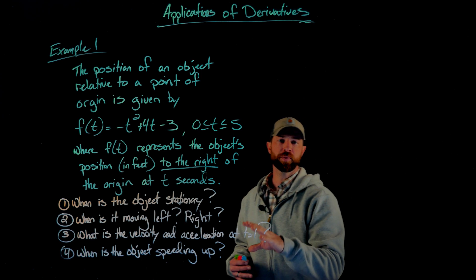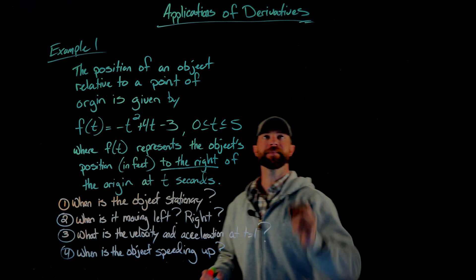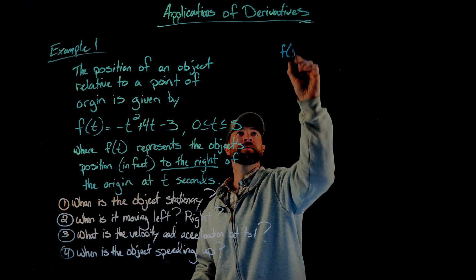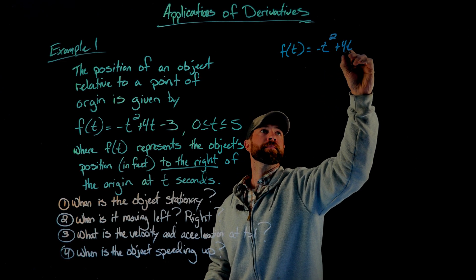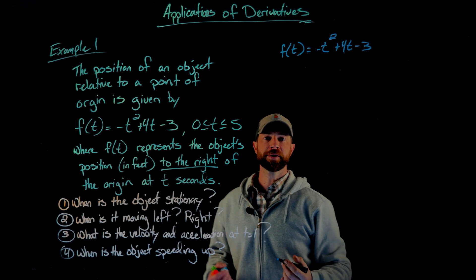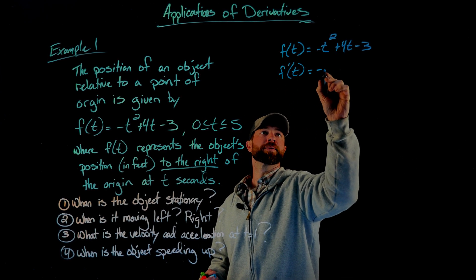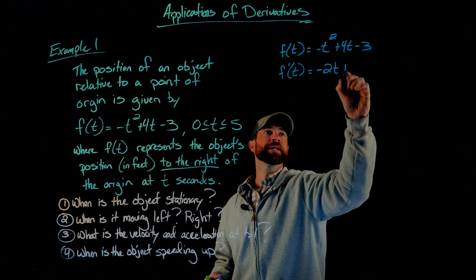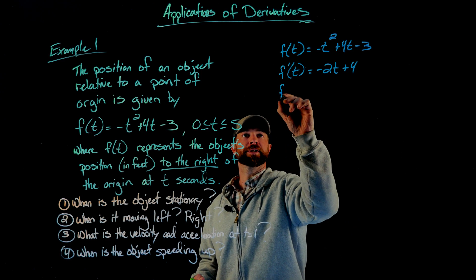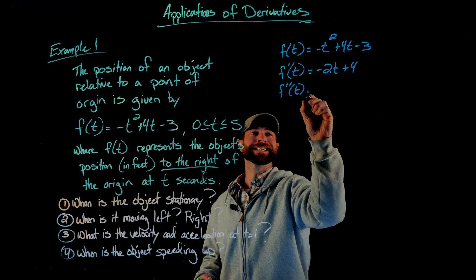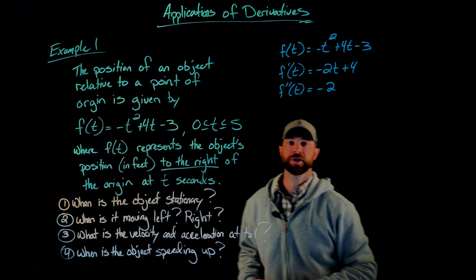In order to tackle the questions we have in front of us, we're going to need to compute the first and the second derivatives. So first we have the position function — f tells us the position of this function t seconds later. The first derivative tells us the velocity, which in this case is negative 2t plus 4. The second derivative of this position function tells us the acceleration, which would be negative 2.